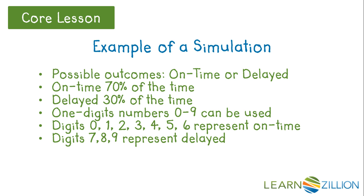A delayed flight happens 30% of the time. 30% of 10 is 3, so we need to use 3 digits to represent a delayed flight. The 7 digits 0, 1, 2, 3, 4, 5, and 6 will represent an on-time flight, and the 3 digits 7, 8, and 9 will represent a delayed flight. The assignment of digits is arbitrary, just as long as you have 7 digits that represent an on-time flight and 3 digits that represent a delayed flight.